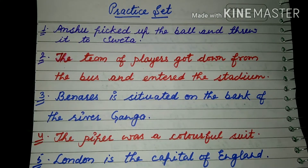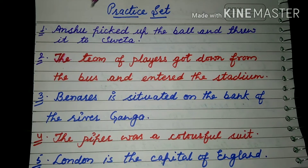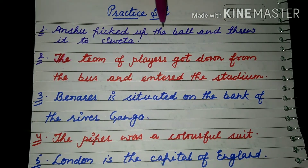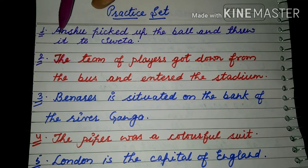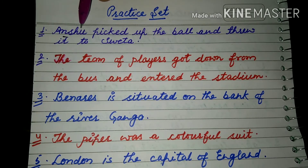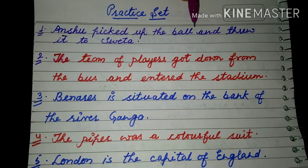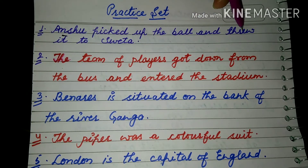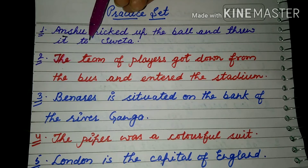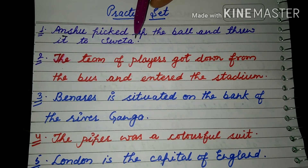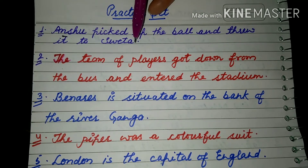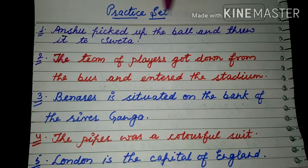We have completed our grammar chapter. Let us discuss some examples. 'Anshu picked up the ball and threw it to Shweta.' Here, Anshu is a proper noun, picked up is a verb, 'the' is an article, ball is a common noun, threw is a verb, it is a third person pronoun, to is a preposition, Shweta is a proper noun. So Anshu and Shweta are proper nouns and ball is a common noun.